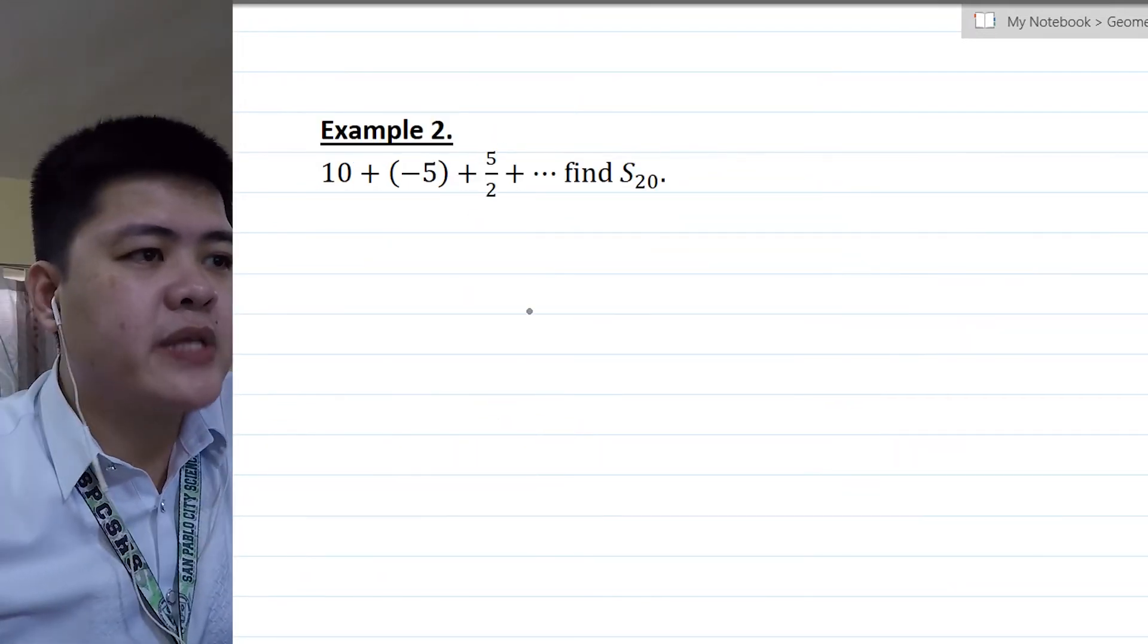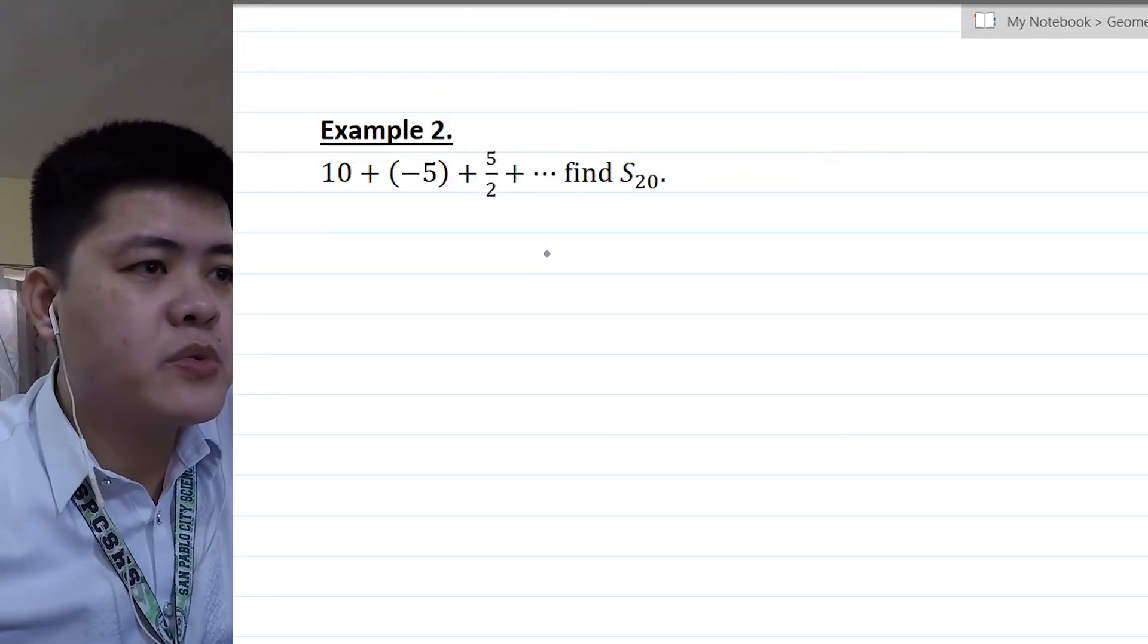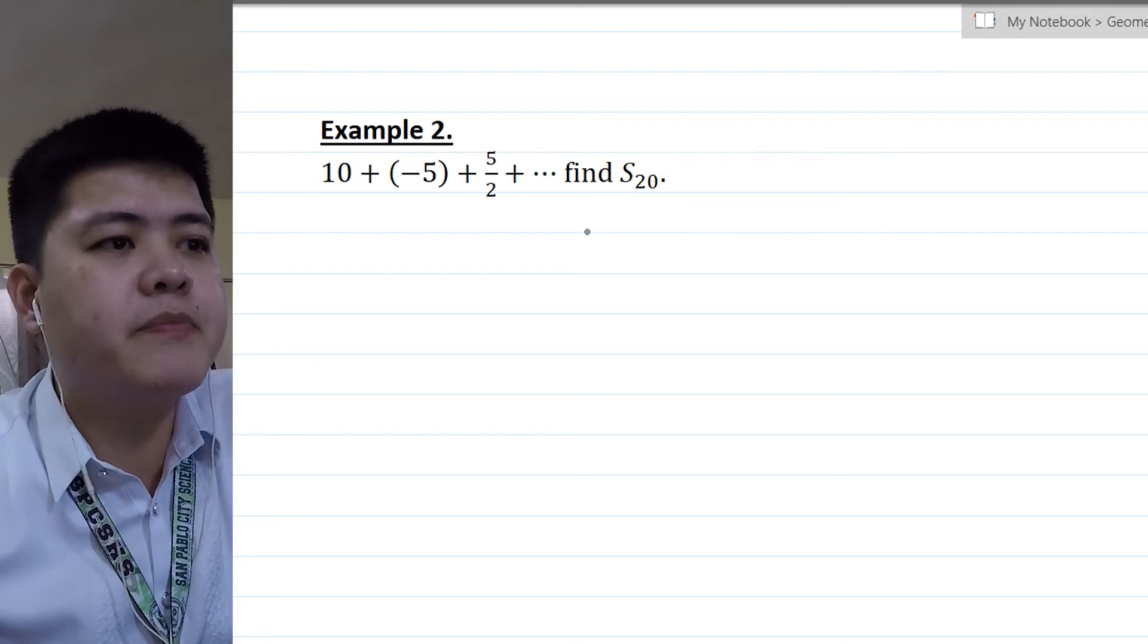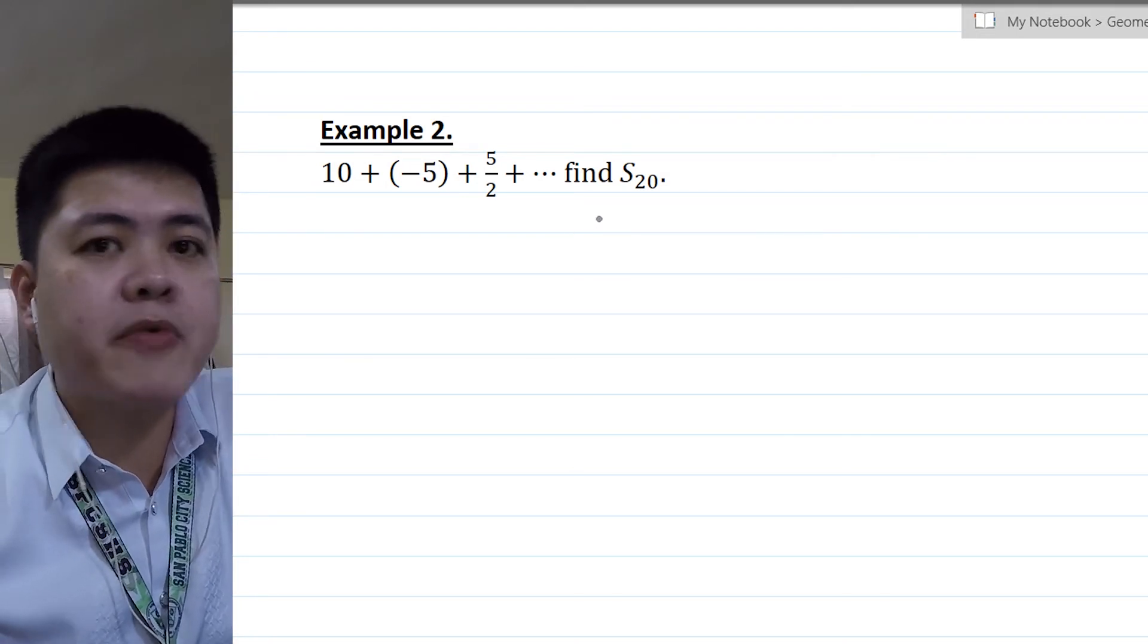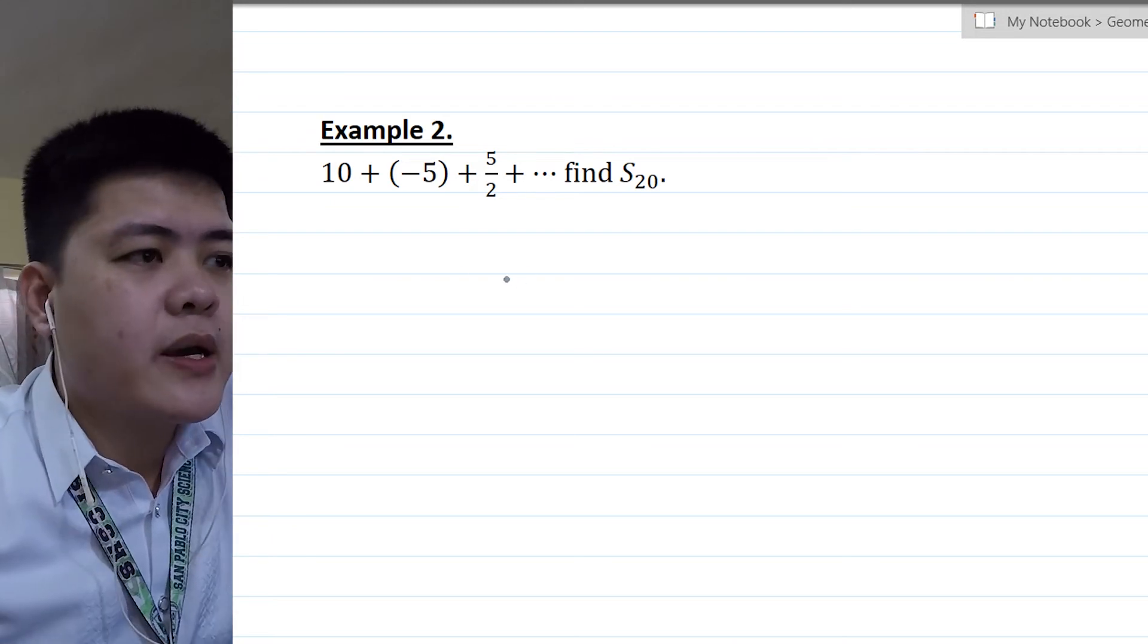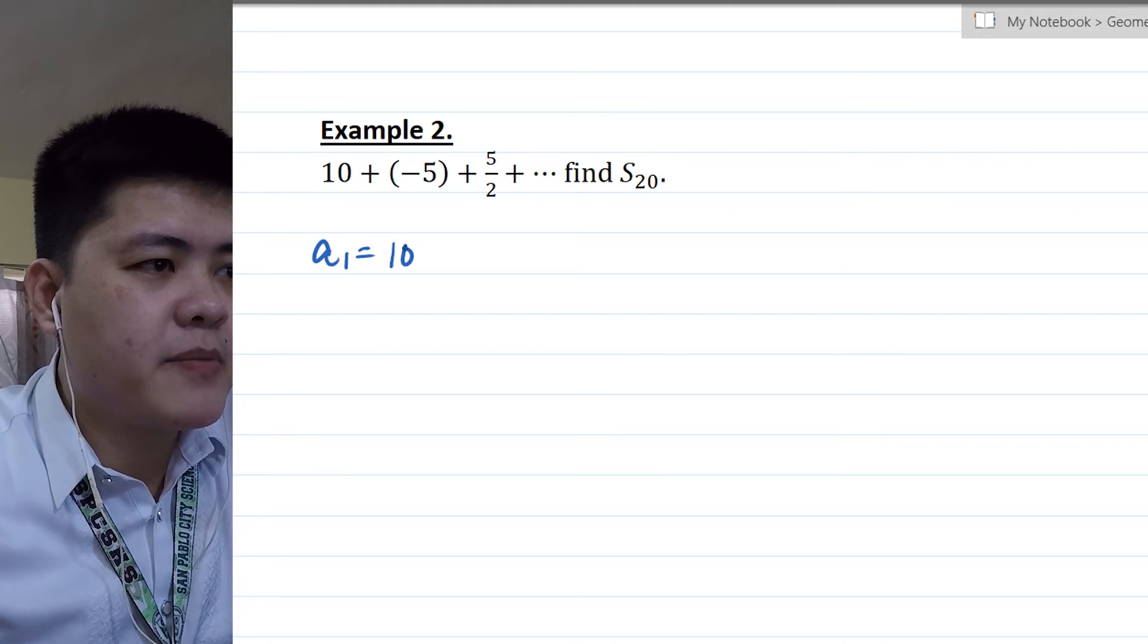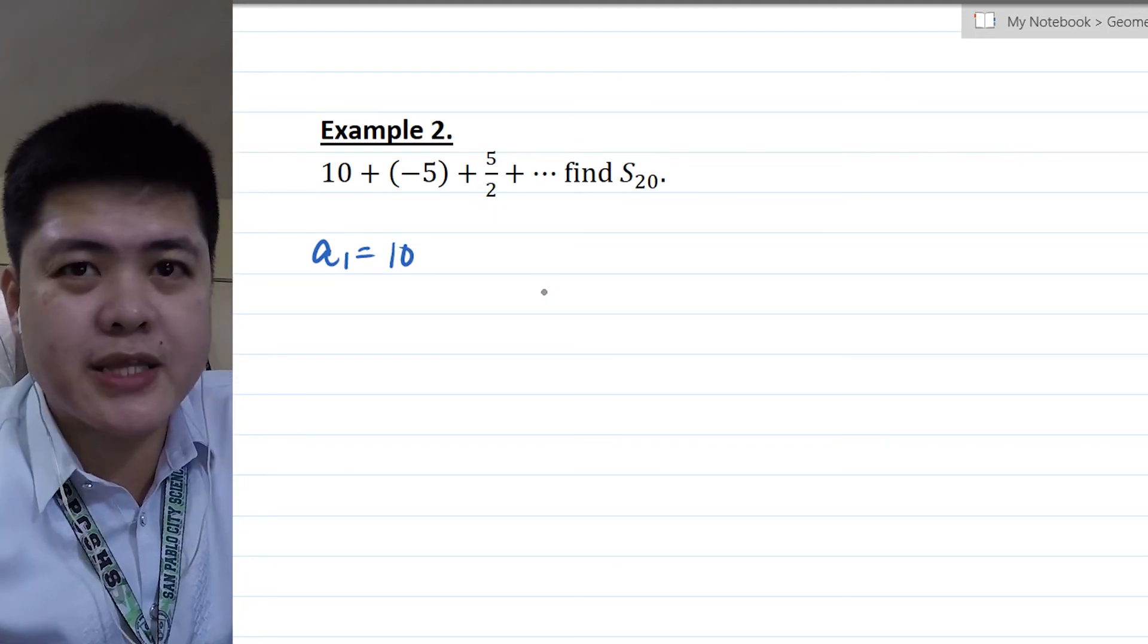In the series, 10 plus negative 5 plus 5 over 2 up to the 20th term, we're going to look for the sum of the first 20 terms. We already know what's A sub 1. A sub 1 here is 10. But the common ratio we don't know. So let's find the common ratio.